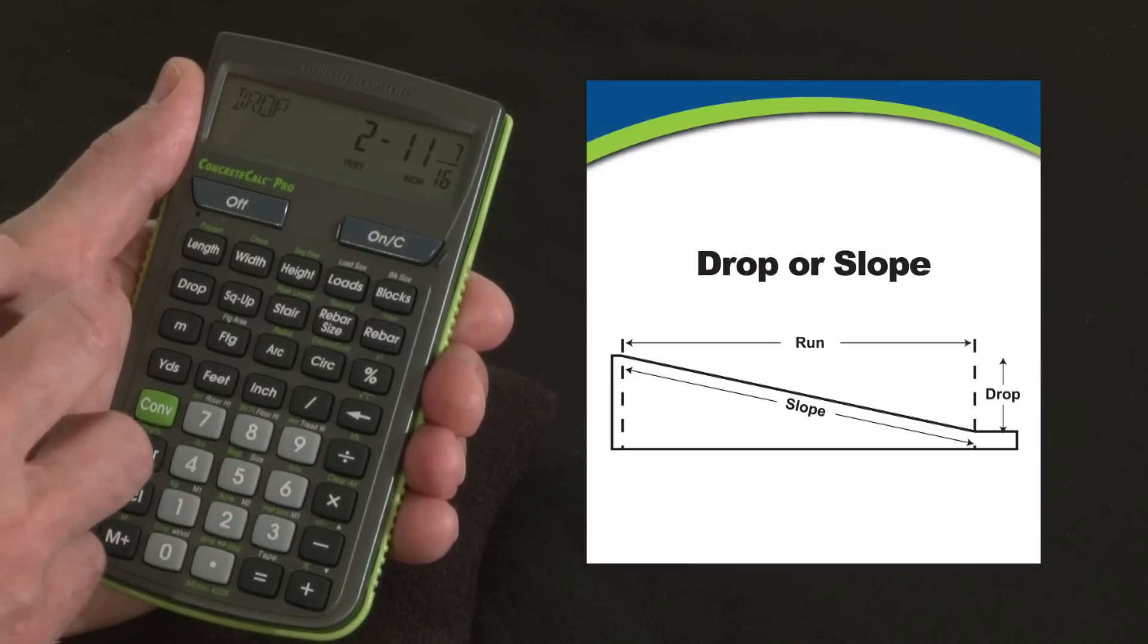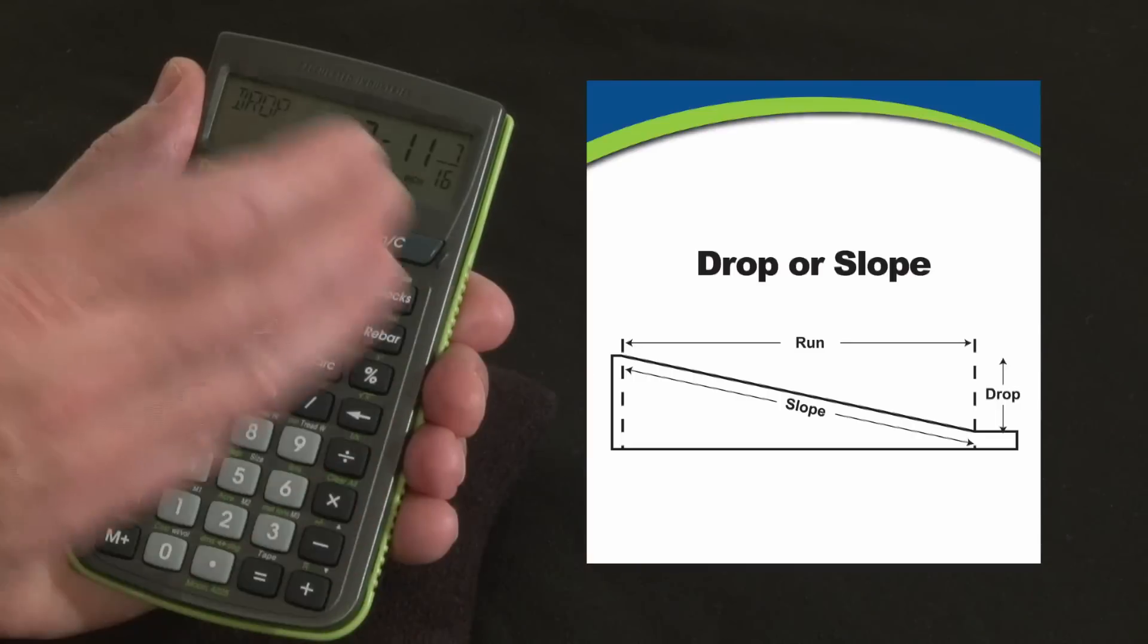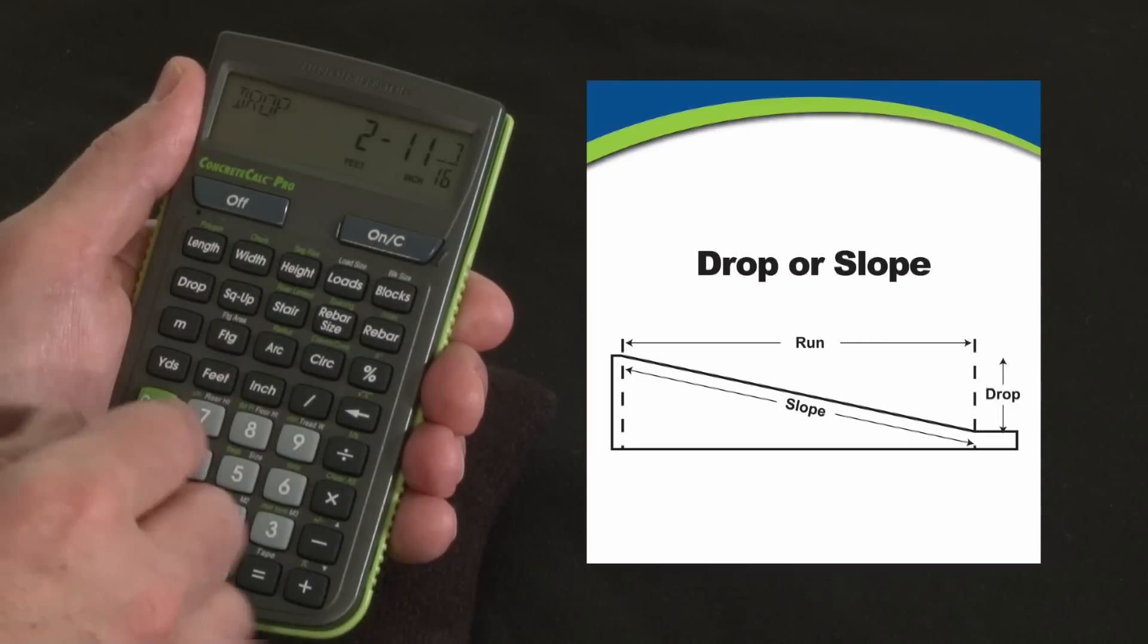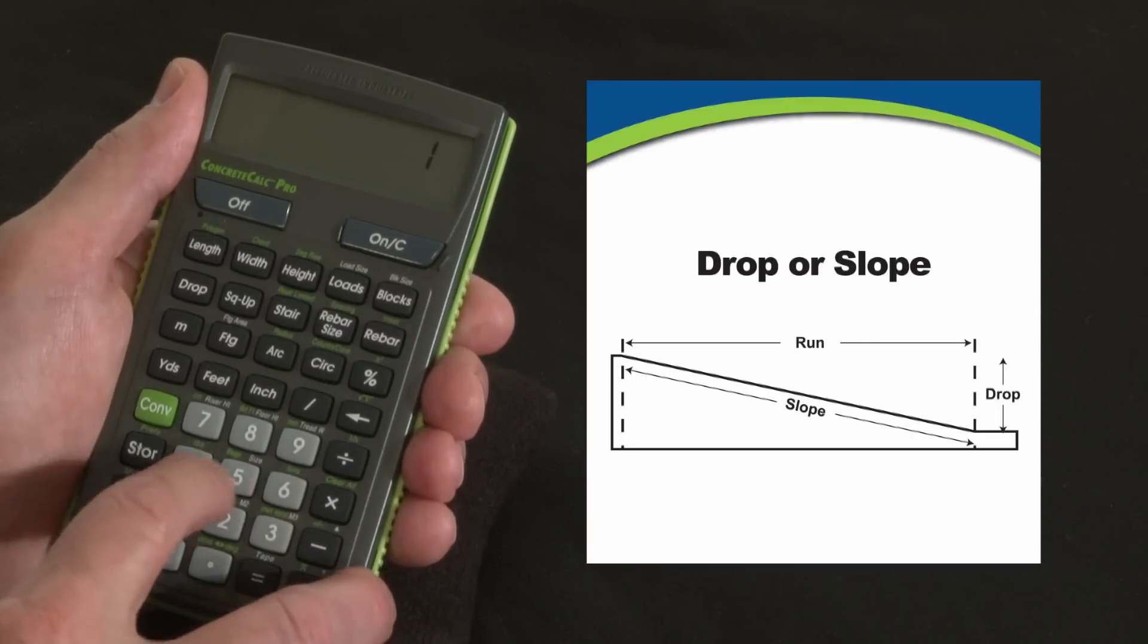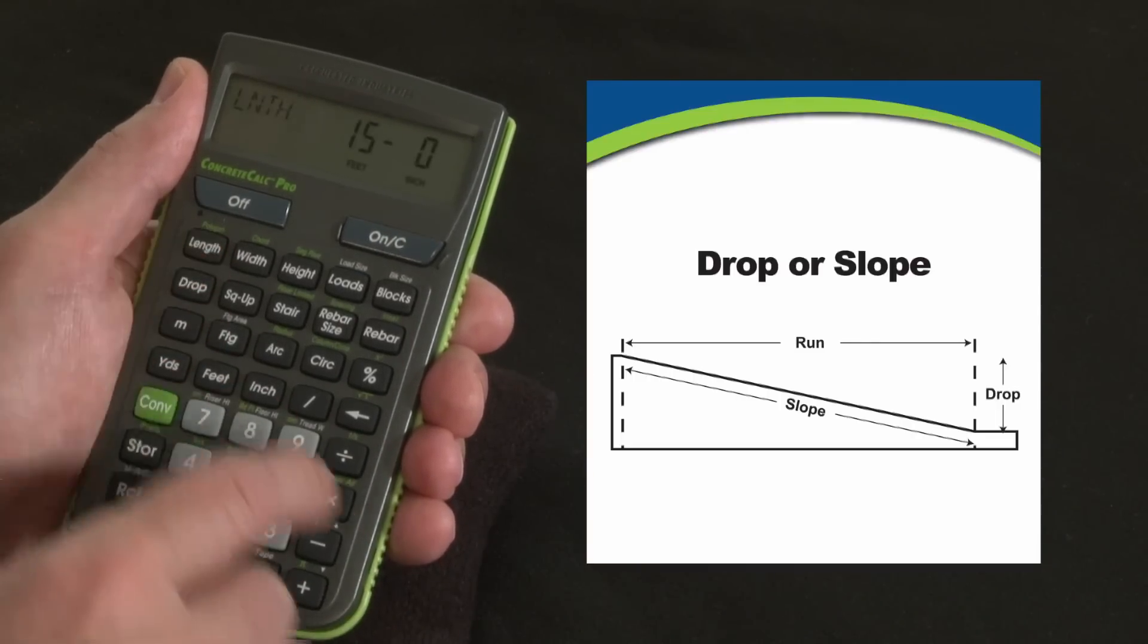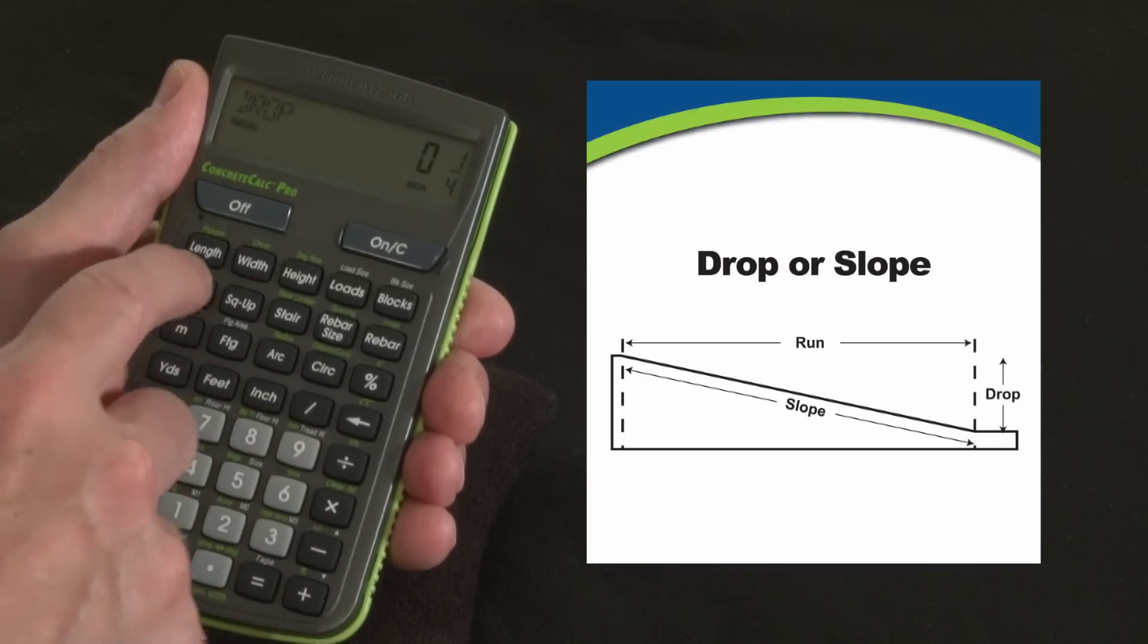Now you're not likely to want to stake it out over that full distance. You're probably going to want to stake it out in increments of maybe 10 or 15 feet. So let's go back in and put 15 feet as our length and use that same quarter inch per foot drop.